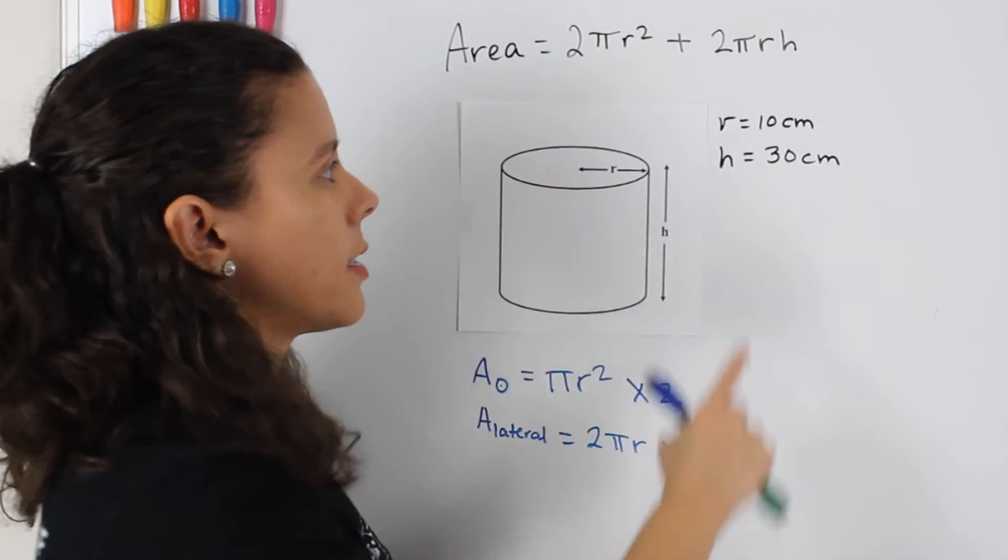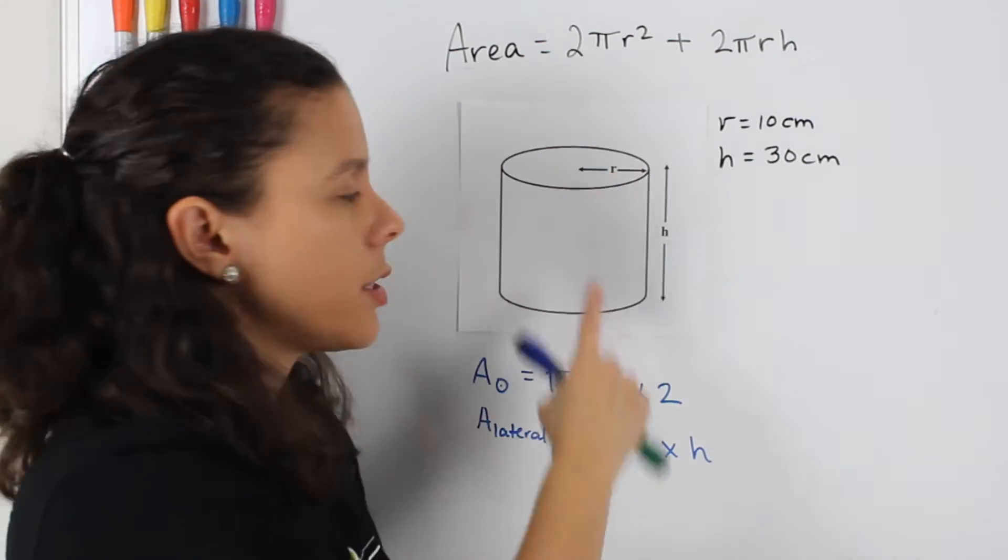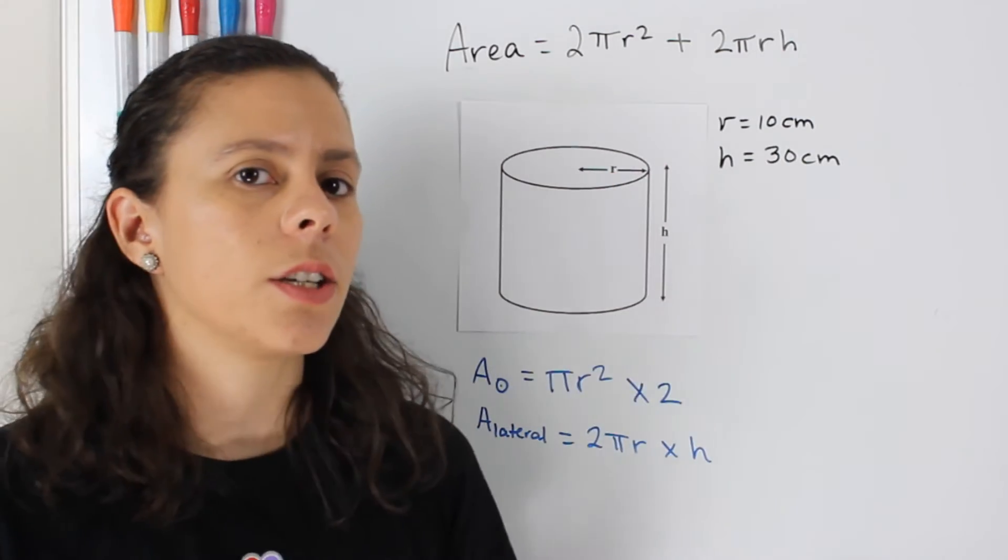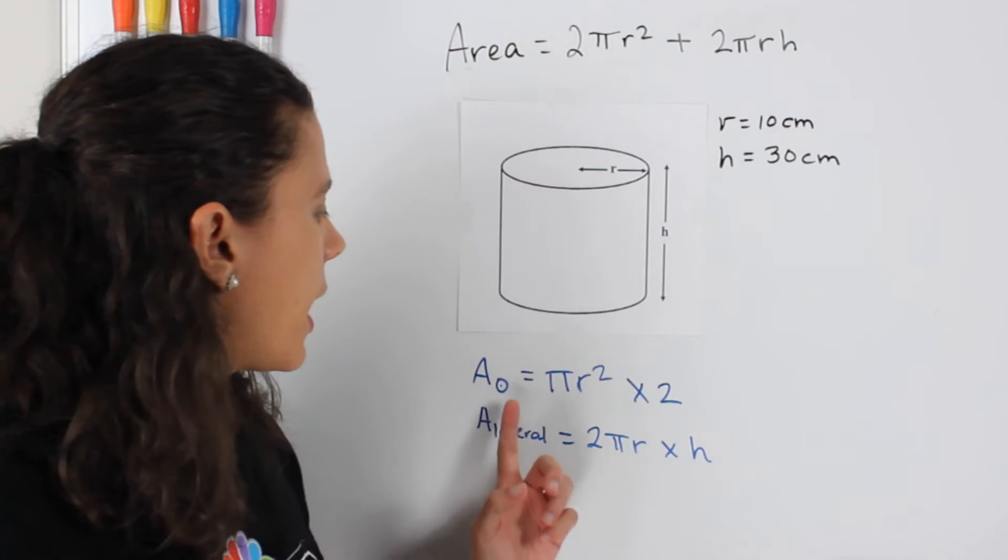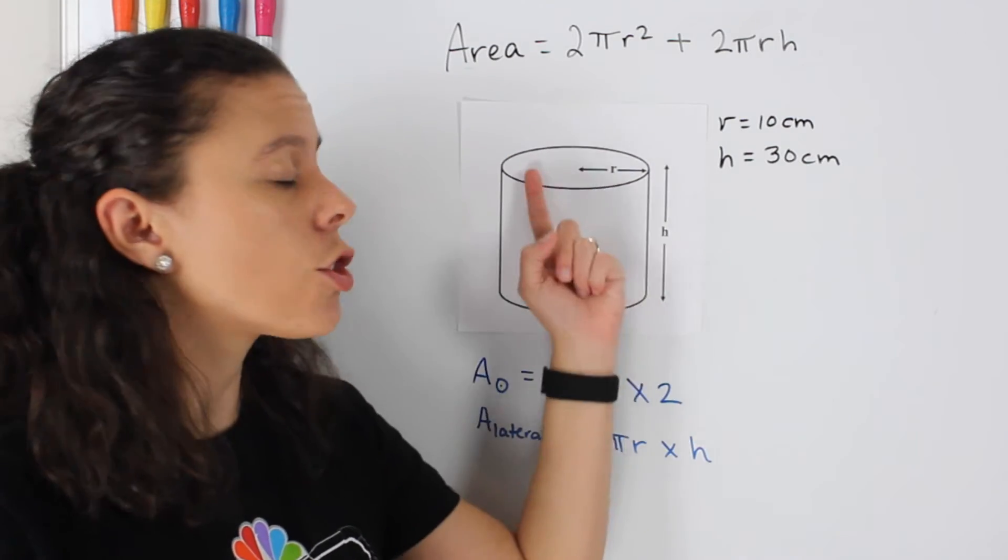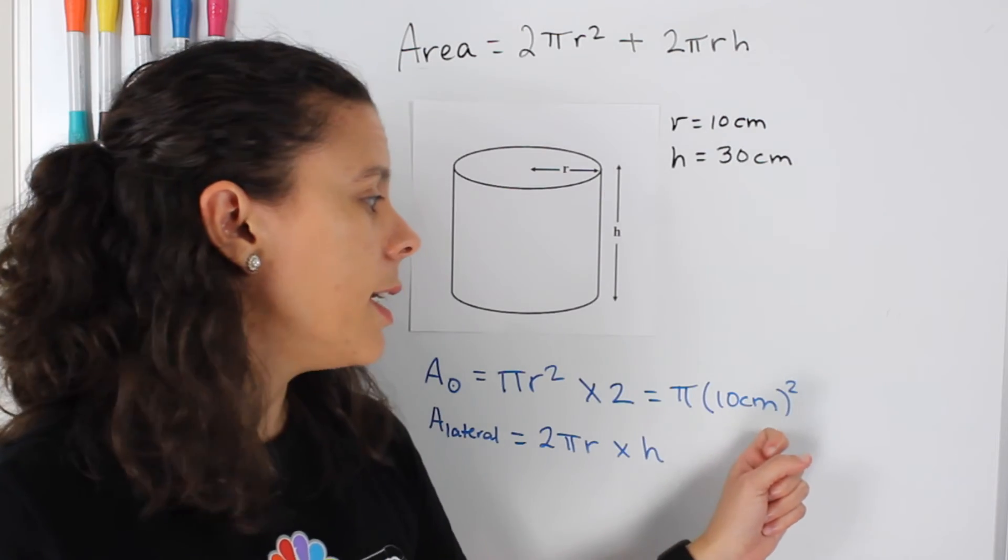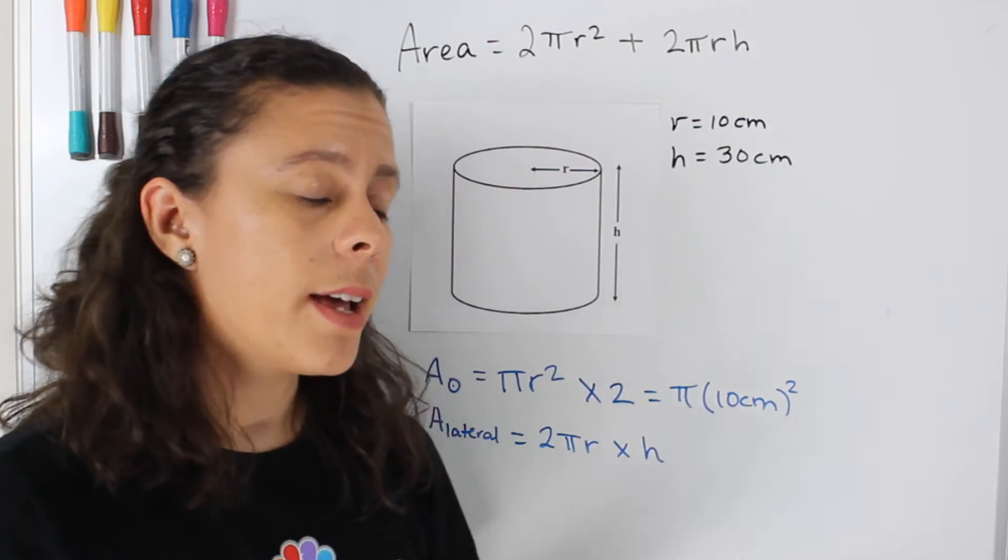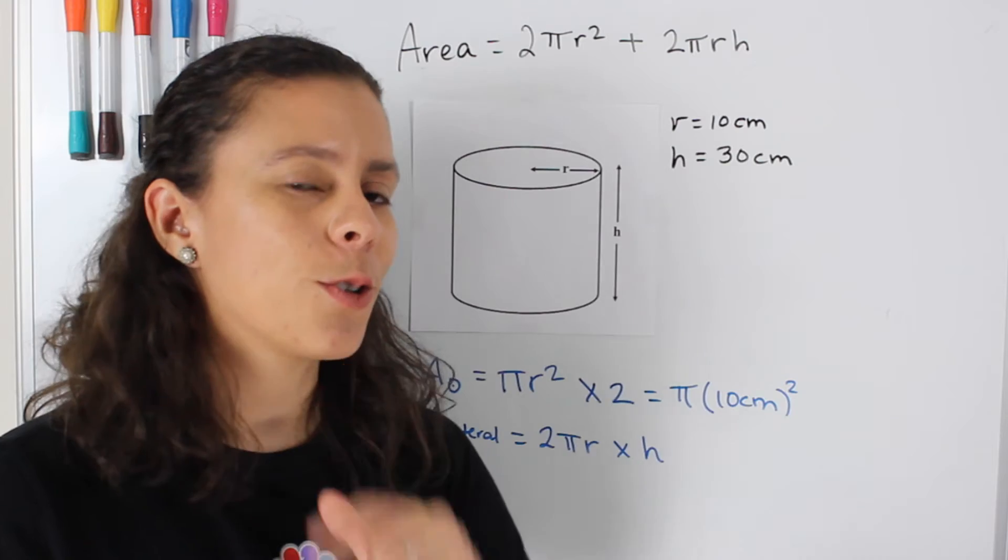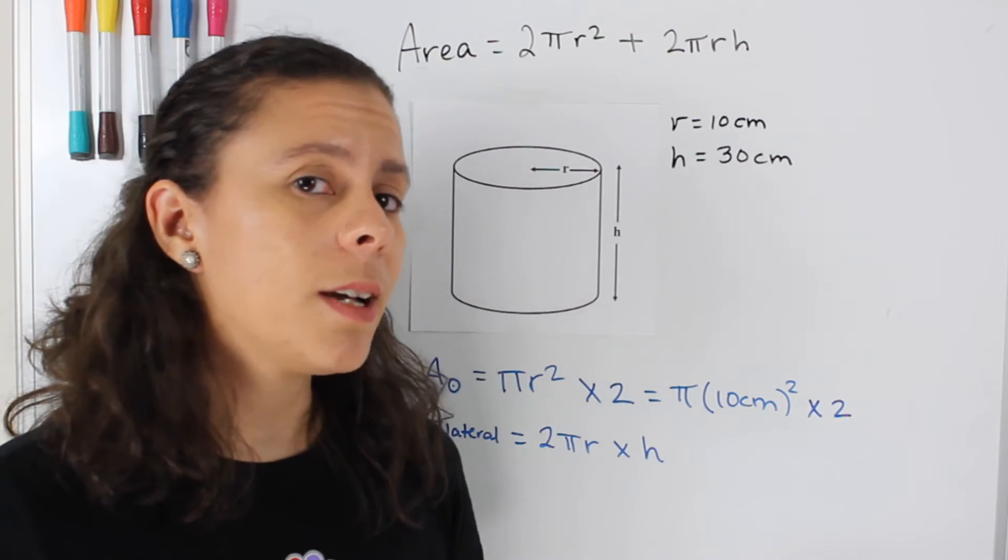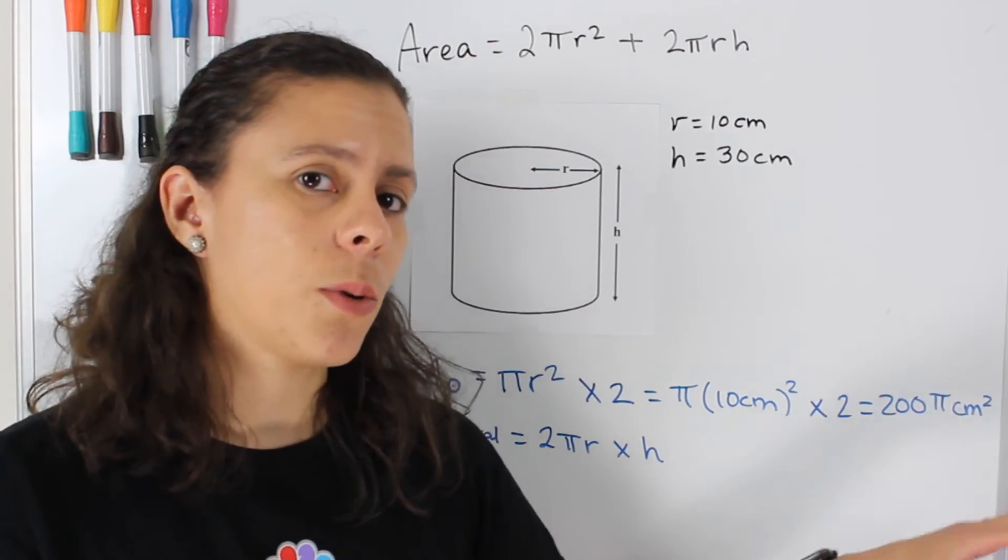So if we make the radius equal to 10 centimeters, and we make the height of the cylinder 30 centimeters, we will find that the area of each circle is going to be pi times 10 centimeters squared. But remember that we have 2, so we got to multiply times 2.